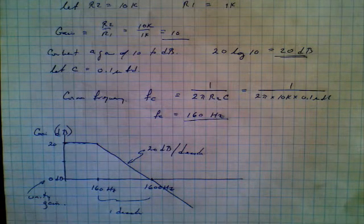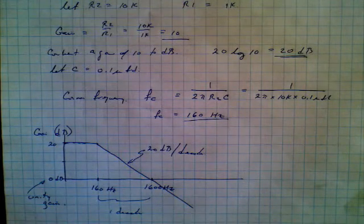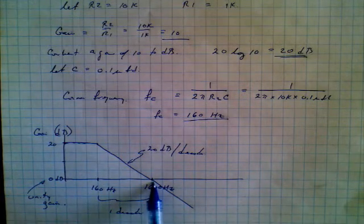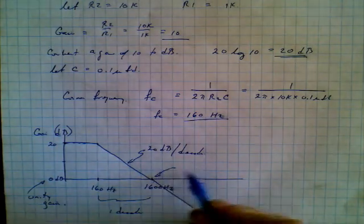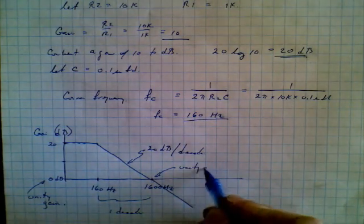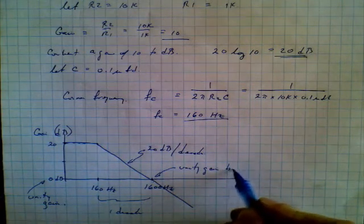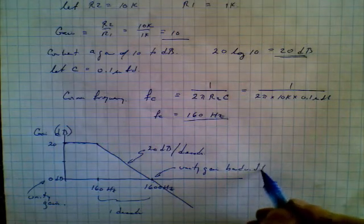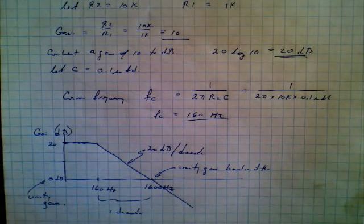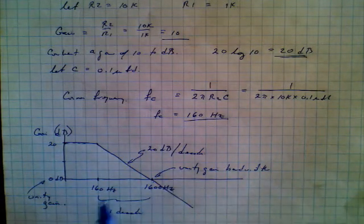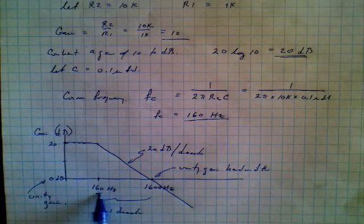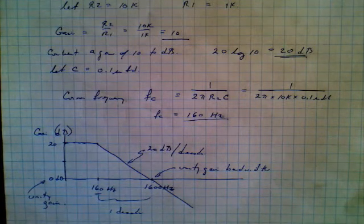Now at this point we might wonder, well, what is the real bandwidth of this circuit? This is the unity gain bandwidth. Well, the actual bandwidth is this point right here, the 160 hertz.